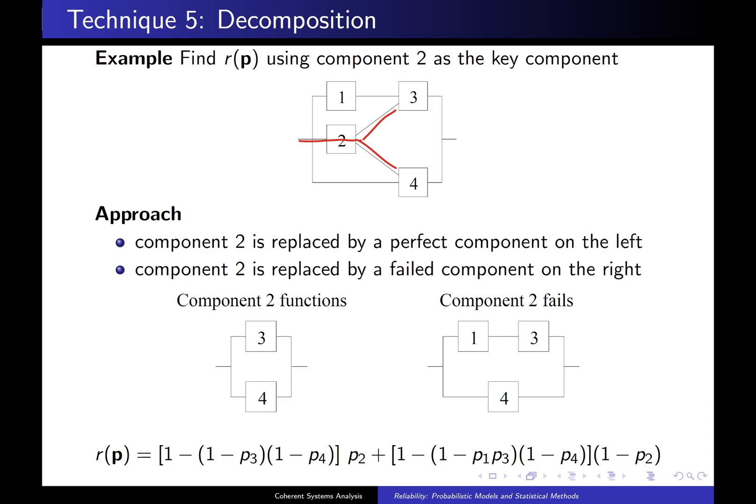In other words, there's no sense of having to be concerned about component 2 failing. Well, when we do that, what have we done to component 1? We have made it irrelevant. The state of component 1 does not matter anymore. The only thing that matters are components 3 and 4. And if either component 3 or component 4 is functioning, then this system is functioning. And that leads you to this particular block diagram, which is appropriate when component 2 is replaced by a perfect component.